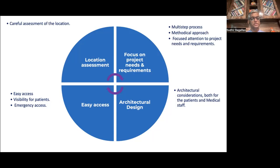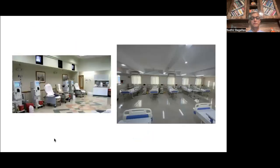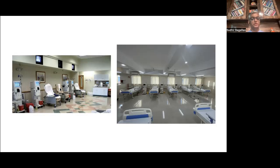Easy access, visibility for the patient, emergency access — all those things need to be considered while you plan setting up a dialysis unit. Here are a couple of dialysis units that we have designed. On the right side is a spacious one where you have enough space between the two rows of beds. On the other side, you can see the recliner where we have space limitation. In that case, you can go for the recliner chair in order to optimize the space.